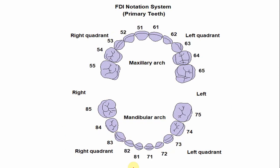In the FDI notation system, the numbers also begin from the midline. The number for the left mandibular canine is 73: 7 denotes the left mandibular quadrant, and 3 is the tooth number. For the right mandibular canine, the number is 83: 8 indicates the right mandibular quadrant, and 3 is the tooth number.